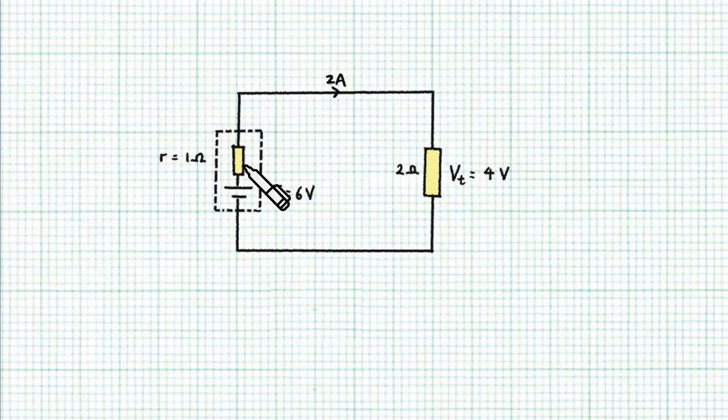Because this battery has an internal resistance of 1 ohm, when it pushes a current of 2 amps through the circuit, 2 volts is used to push the current through the internal resistance itself, and that leaves only 4 volts for the external circuit.